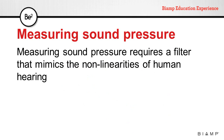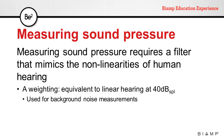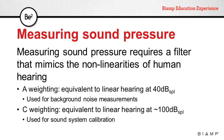Most, if not all, sound pressure level meters include filters, so the measured output takes this into account. In the audio industry, the most common filters are A and C. The A weighting filter is equivalent to linear hearing at 40 dB SPL and is generally used for background and noise measurements. C weighting is equivalent to linear hearing at about 100 dB SPL and is used for sound system calibration.